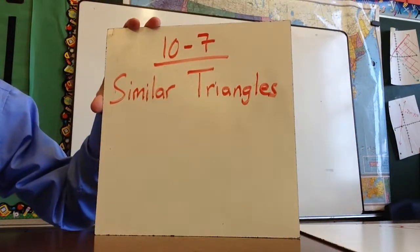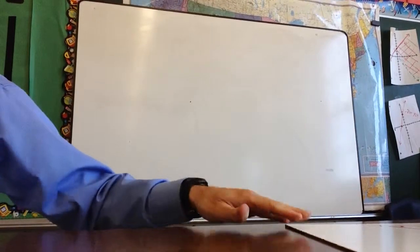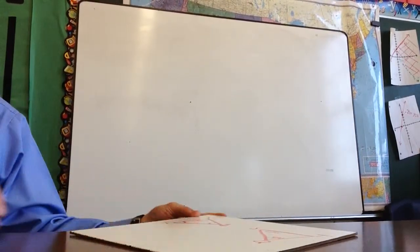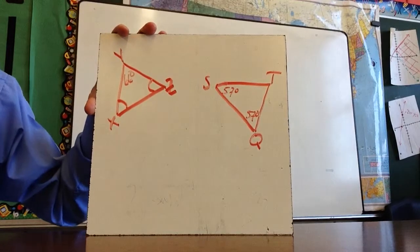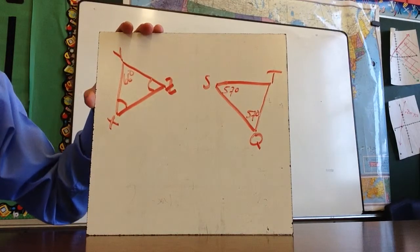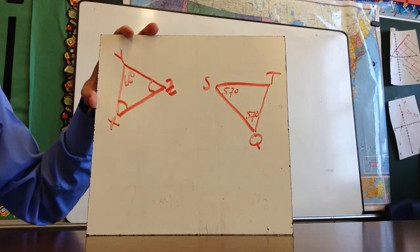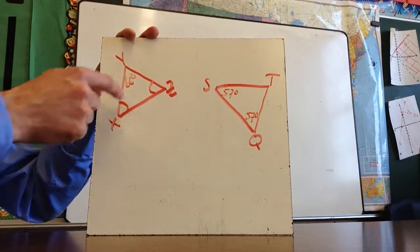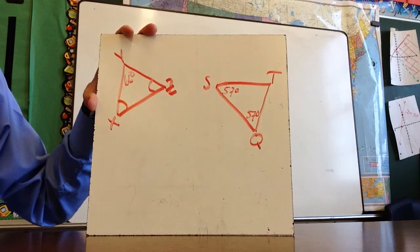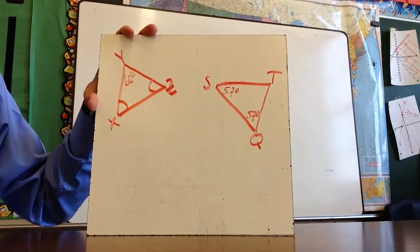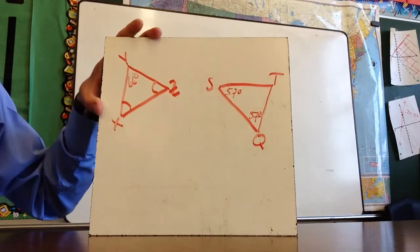This video will discuss chapter 10-7, Similar Triangles. Similar triangles have to have congruent angles, and their sides would have to be a consistent ratio — each corresponding side would have to be similar to the other corresponding sides. We're going to look more at the sides in just a second.